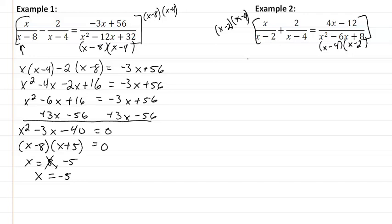So we're going to take x times x minus 4 plus 2 times x minus 2 equal to 4x minus 12.